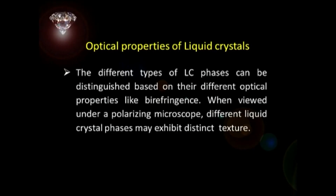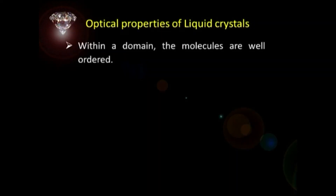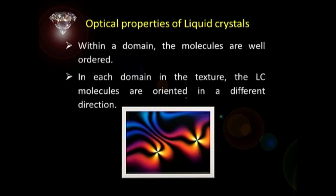The optical properties of liquid crystals also have something to do with the order. The different LC phases can be distinguished based on their different optical properties, like birefringence. When viewed under a polarizing microscope — a very useful instrument in liquid crystalline research — different liquid crystal phases may exhibit distinct textures. Within a domain, the molecules are well ordered, but in each domain the LC molecules are ordered in a different direction.